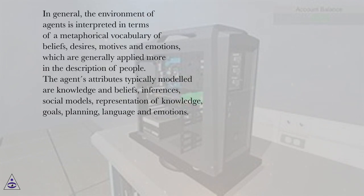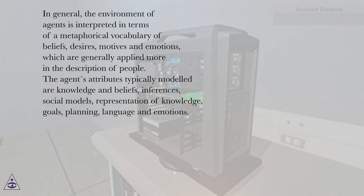In general, the environment of agents is interpreted in terms of a metaphorical vocabulary of beliefs, desires, motives, and emotions, which are generally applied more in the description of people. The agents' attributes typically modeled are knowledge and beliefs, inferences, social models, representation of knowledge, goals, planning, language, and emotions.